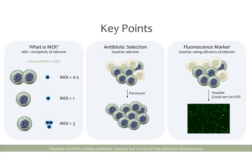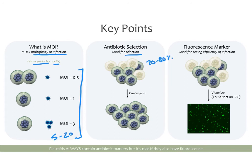A few key points: MOI stands for multiplicity of infection, which is a ratio of virus particles to cells. A typical MOI of 5 to 20 is usually enough to infect your cells. Regarding antibiotic selection: you don't have to do it if you have very high transduction efficiency — say 70 to 80 percent — and it's enough for your experiment. But if you want a truly pure population, antibiotic selection is a good idea. Not every cell will take up the virus, so treating with puromycin eliminates untransduced cells, giving you a pure population where every cell expresses your modification.